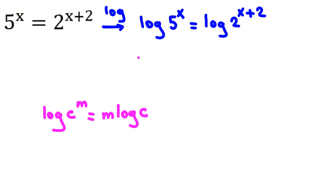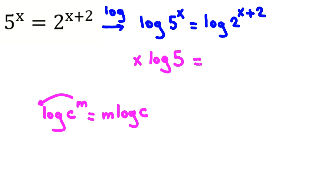If we apply this rule here, the left side becomes x log 5. The power on the right side is x plus 2, so the right side becomes x plus 2 times log 2.